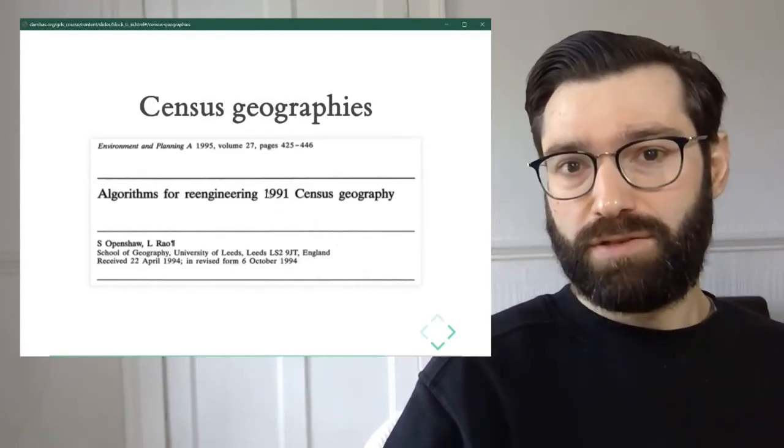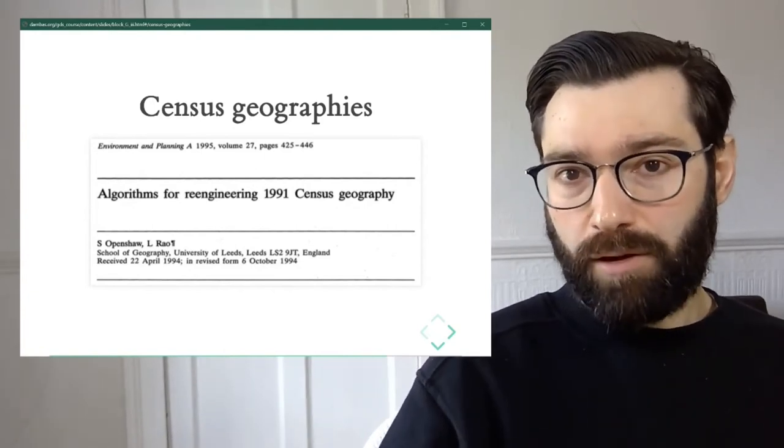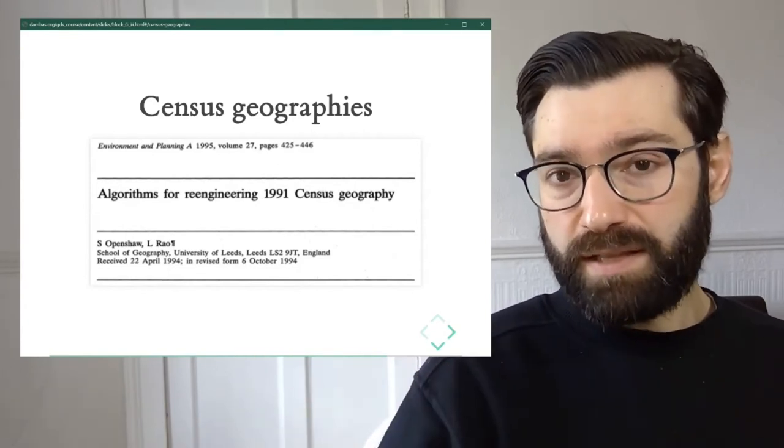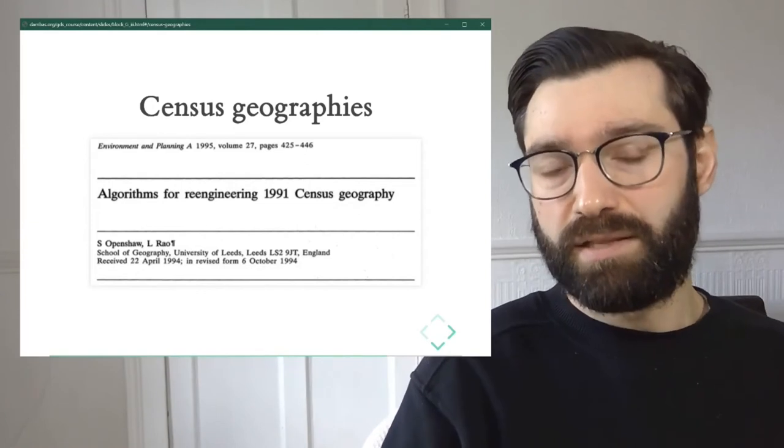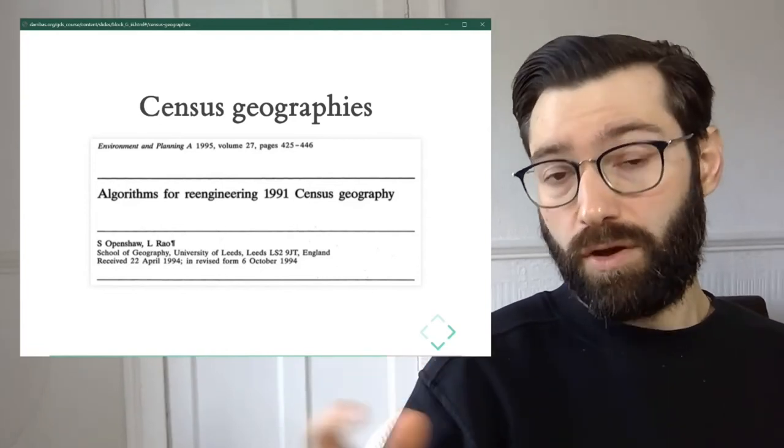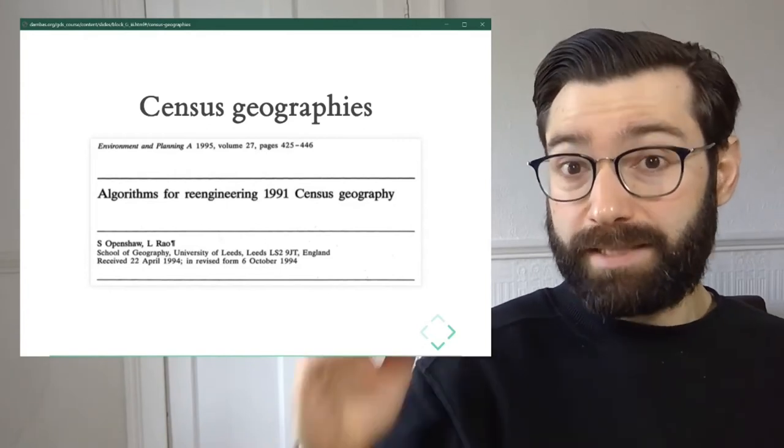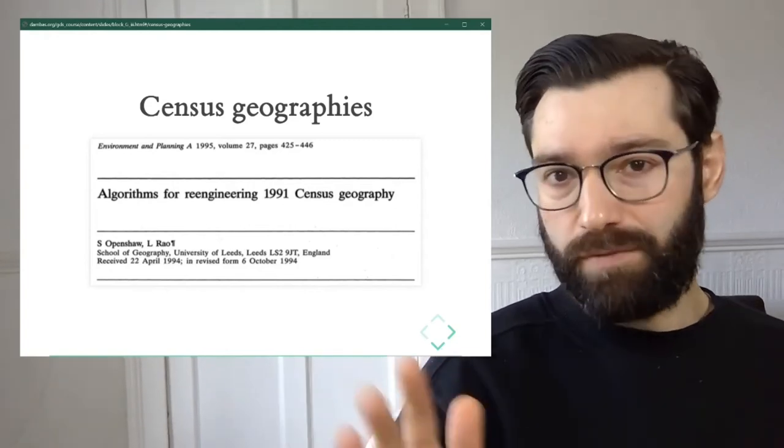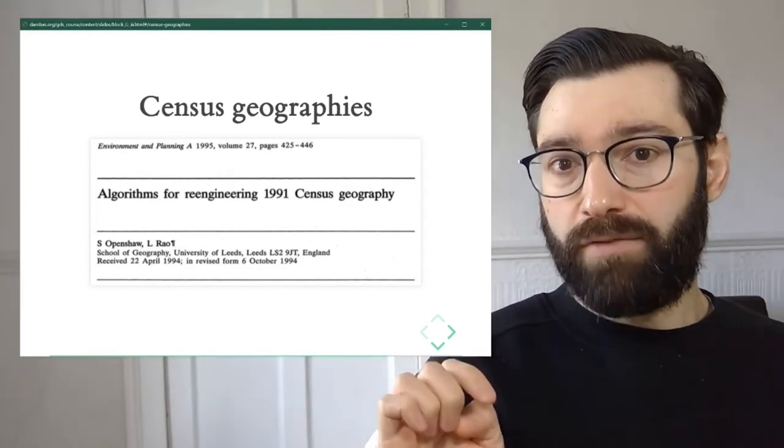The first one is census geographies. Earlier in this course, you might be aware from your own background that the census, the Office of National Statistics, when they produce, when they design the census and when they distribute the census or the output of the census, the data sets that make up the census, they distribute it at a hierarchy of geography. So in other words, when you're looking for data for the census, this is available at several levels. At the finest point, we have output areas. This is the smallest type of area that you have availability for census data.